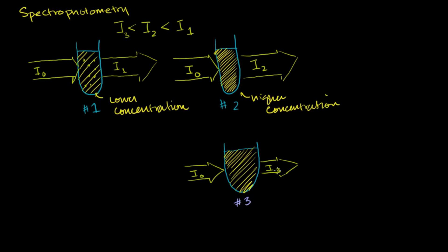If you were looking at these: this has the least light, this has a little bit more light being transmitted, and this has the most light being transmitted. So if you placed your eyeball here, number one would have the lightest color — you're getting the most light into your eye. Number two would be a slightly darker color, and number three would be the darkest color. That makes complete sense. If you dissolve a little bit of something in water, it'll still be pretty transparent. If you dissolve a lot, it'll be more opaque. And if the beaker gets even longer, it'll get even more opaque. So hopefully that gives you the intuition behind spectrophotometry.